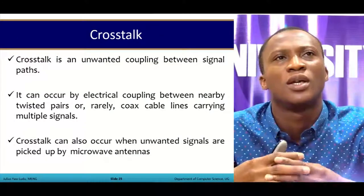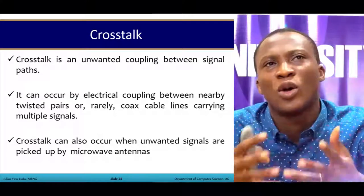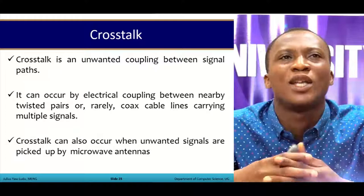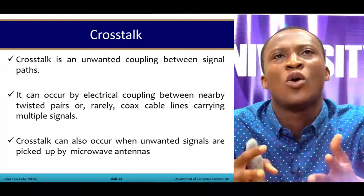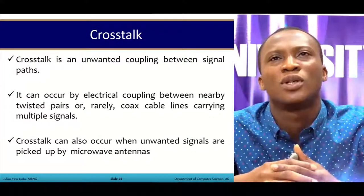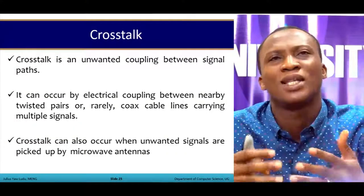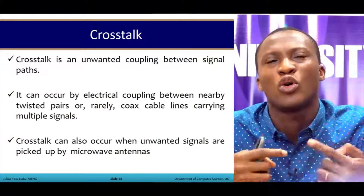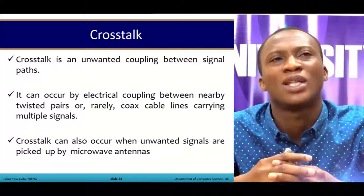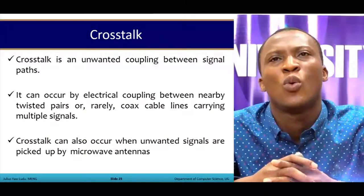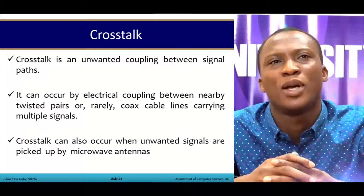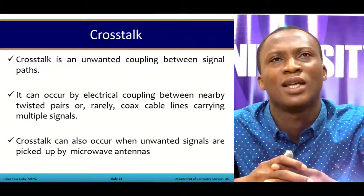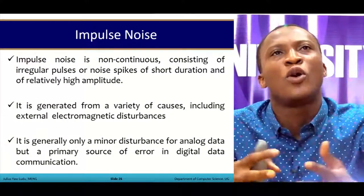Crosstalk is an unwanted coupling between two or more signal paths where the paths crisscross. It can occur through electrical coupling between nearby twisted pair wires or coaxial cable lines carrying multiple signals. Crosstalk can also occur when unwanted signals are picked up by microwave antennas.